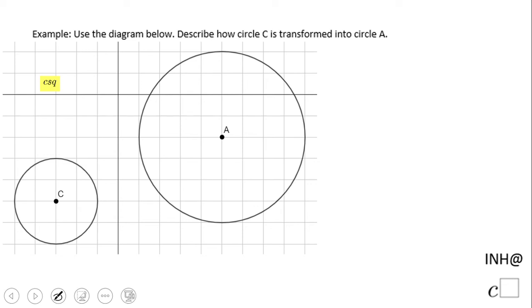Welcome or welcome back to INH at C squared. In this example we have two circles given, A and C, and they ask us to describe how circle C is transformed into circle A. So in other words, this is the starting point and we're going to get circle A. If you notice, circle A is larger so that means it should be a dilation.